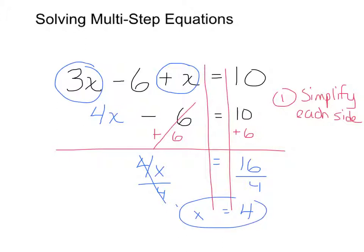And then I can always go back and check. What's 3 times 4 minus 6 plus 4? 3 times 4 is 12 minus 6 plus 4. 12 minus 6 is 6 plus 4 is equal to 10. So my answer checks.